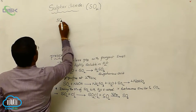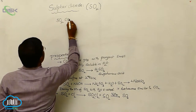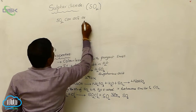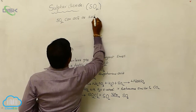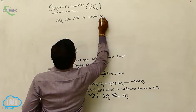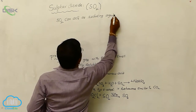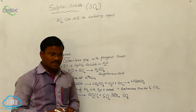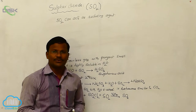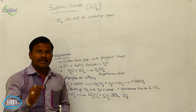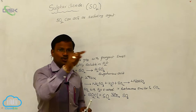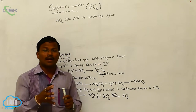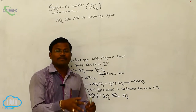Sulfur dioxide acts as a reducing agent. Generally, during a chemical reaction, sulfur dioxide can reduce Fe³⁺ ions into Fe²⁺ ions, or colored potassium permanganate (permanganate ions) undergoes a chemical reaction with sulfur dioxide.